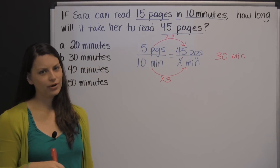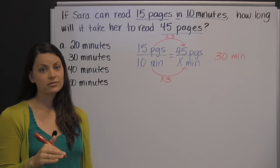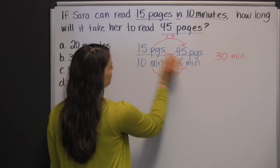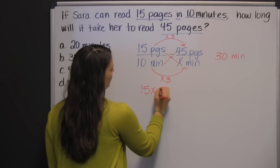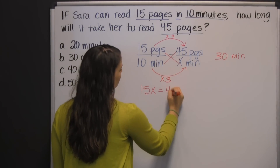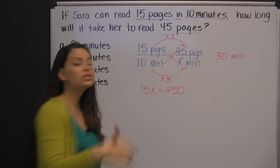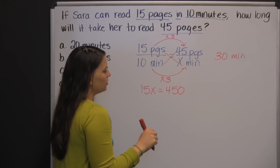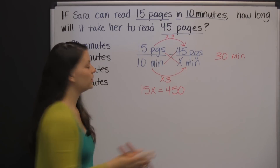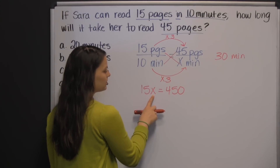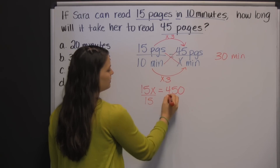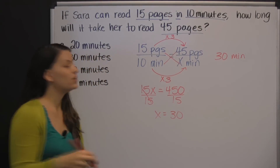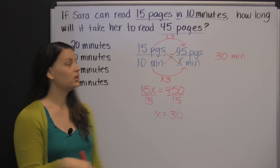But that won't always work. What will always work is using cross-products — that just means cross-multiplying. 15 times x is 15x, and that equals 10 times 45, which is 450. What you need to know about proportions is that their cross-products are always equal. So now you just need to solve your equation, which means undoing what's been done to your variable x. In this case, we need to divide both sides by 15, and x equals 30. So we know it's going to take 30 minutes to read those 45 pages.